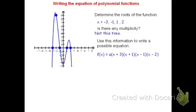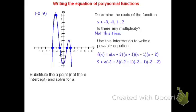To solve for the stretch factor, I'm going to take a point that's not the x-intercept and substitute it into the equation. I see that the point up top, negative 2, 9, is marked. So I can substitute x as negative 2 and y as 9. Now I can simplify each of the factors: negative 2 plus 3 is 1; negative 2 plus 1 is negative 1; negative 2 minus 1 is negative 3; and negative 2 minus 2 is negative 4. Multiplying those out: 1 times negative 1 is negative 1; negative 1 times negative 3 is 3; and 3 times negative 4 is negative 12. To finish solving, we'll divide both sides by negative 12 and simplify.